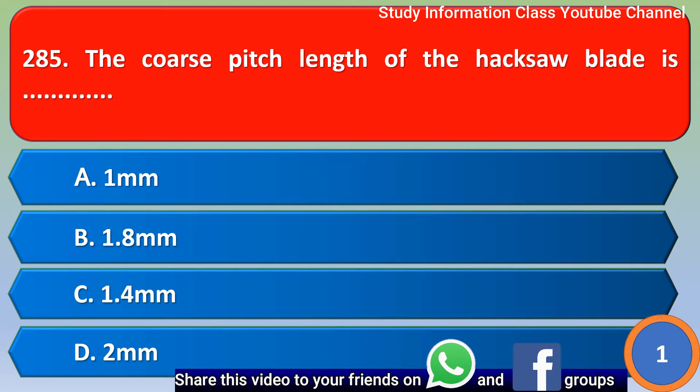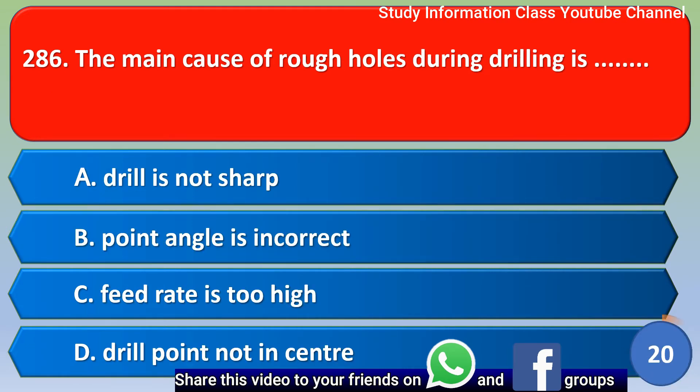The main cause of rough holes during drilling is: Option A, drilling is not sharp; Option B, the point angle is incorrect; Option C, feed rate is too high; Option D, drill point not centered. The right answer is Option C, feed rate is too high.